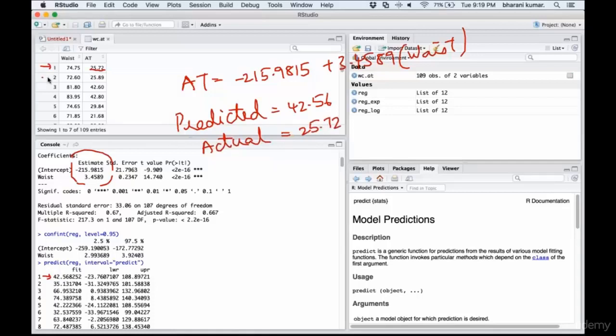If you take the second entry and if you substitute this waist circumference in the equation, you get another predicted value and that predicted value is 35.13, so on and so forth. In reality, your adipose tissue value is 25.89.